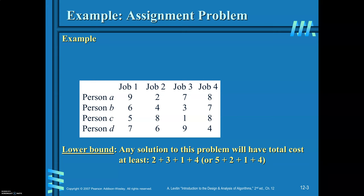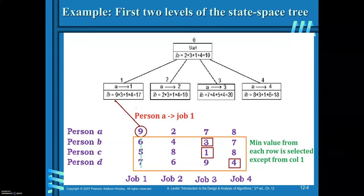We have already calculated the possible minimum cost — the lower bound. Since this is a minimization problem, you are required to find the lower bound. Whenever you want to solve a maximization problem, then you are required to find the upper bound instead.